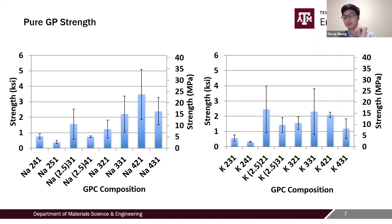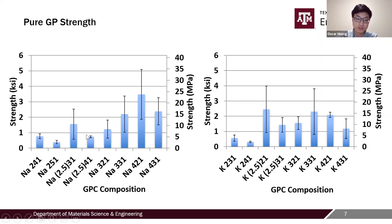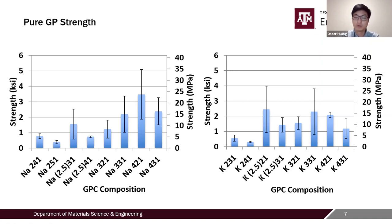For potassium, there is no clear trend — it levels off at roughly 15 MPa once the ratio reaches 2.5, and increasing to 4 has little impact. Interestingly, sodium 321 and 331 as well as potassium 321 and 331 show a reverse trend compared to the other samples, because the 321 compositions are very viscous — almost unworkable. They set very quickly, making the samples very porous with a lot of entrapped air, which makes them very weak despite being dense.